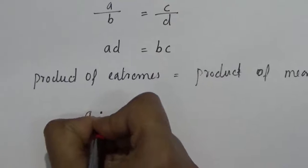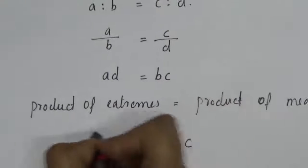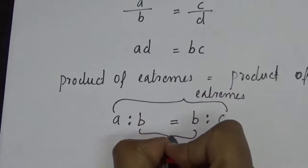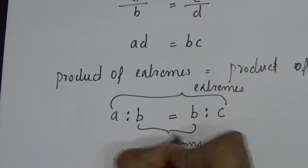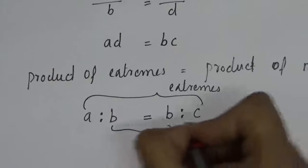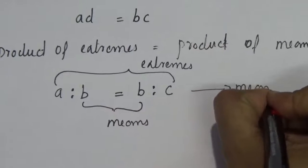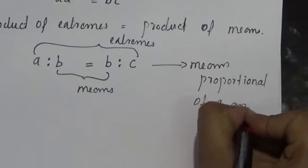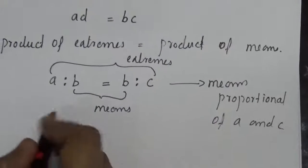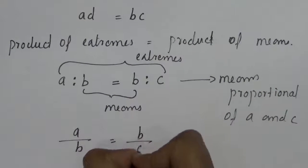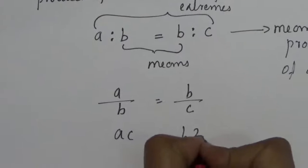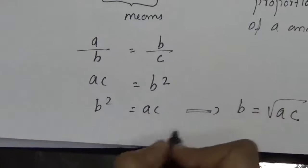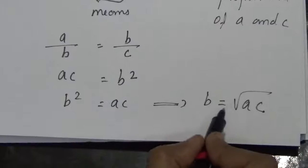Suppose A is to B is equal to B is to C. You can see that A and C are called extremes, and here we have the same mean B repeated. So this proportion is called mean proportion — B is the mean proportional of the extremes A and C. Cross multiplying A by B equals B by C gives A times C equals B squared, so B equals the square root of A times C. The mean proportion of A and C is equal to root AC.